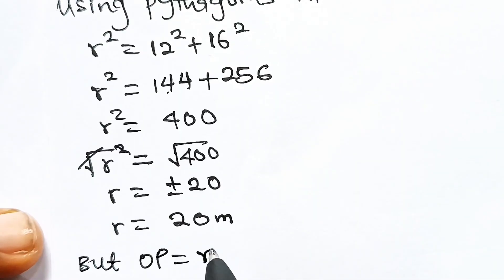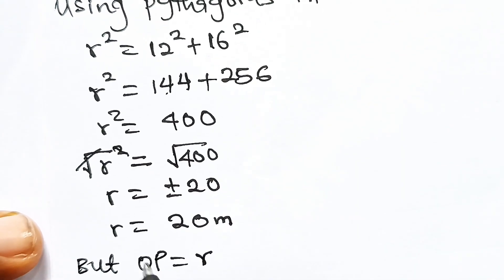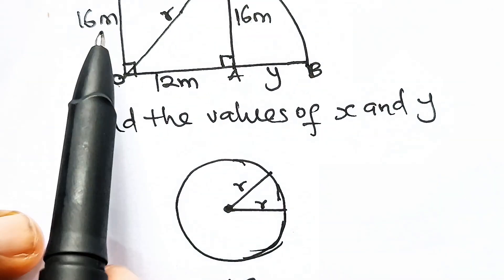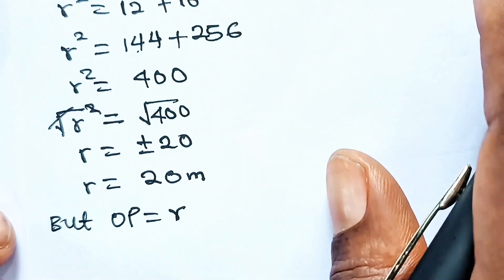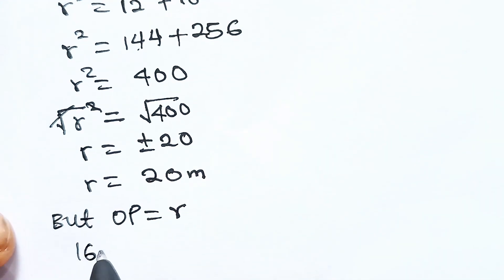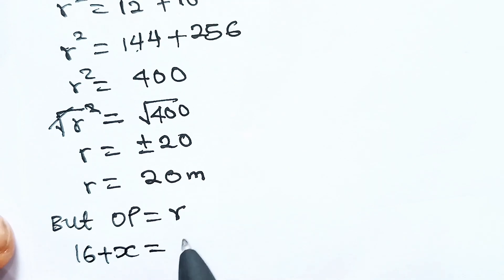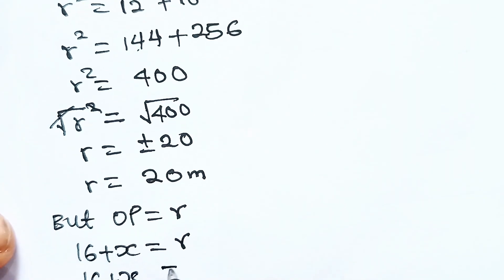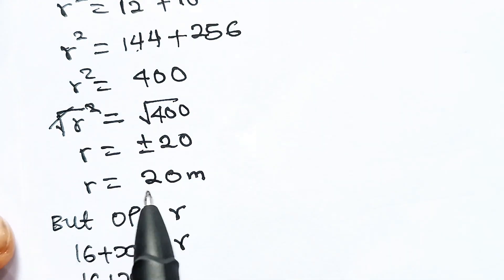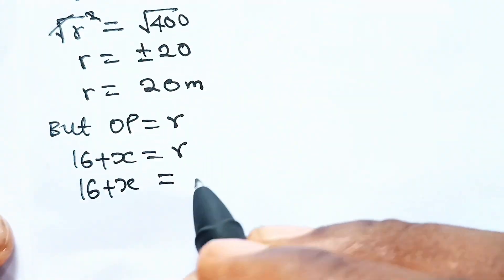So we have 16 + x = r. And our r is 20, so 16 + x = 20.